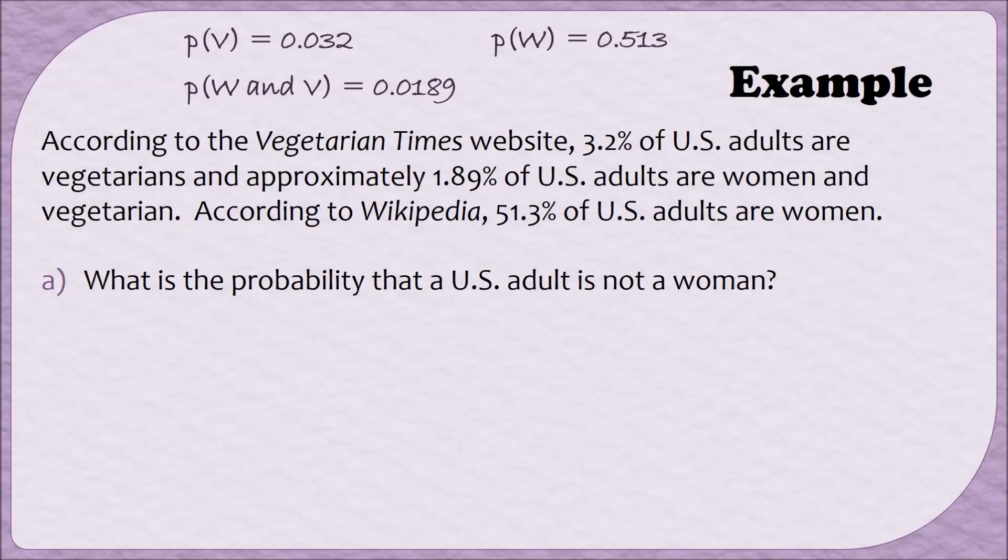Part A. What is the probability that a U.S. adult is not a woman? Now, there are a couple different ways to think about this question, but one way is by using complements. Since the adult is not a woman, that's the same as the probability of woman complement, or the complement of W. In video 2 of this module, we said that the formula for the complement was to take 1 minus the probability of the event. In this case, 1 minus the probability of W is going to be 1 minus 0.513, which is 0.487.